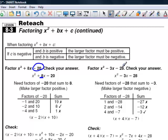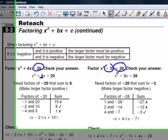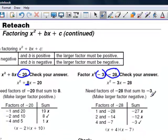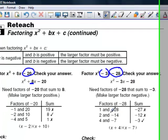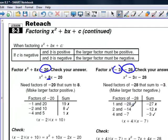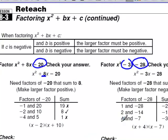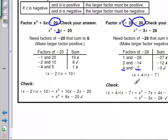When c is negative and b is negative, the larger of the two factors must be negative. We still get one positive and one negative factor, just the reverse of the previous case. Looking for factors of negative 28 that add to negative 3: positive 1 and negative 28 add to negative 27; positive 2 and negative 14 add to negative 12; positive 4 and negative 7 multiply to negative 28 and add to negative 3. So the answer is (x + 4)(x − 7), and we can verify with FOIL.